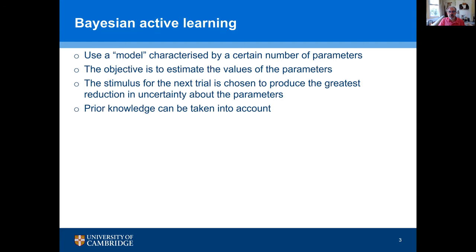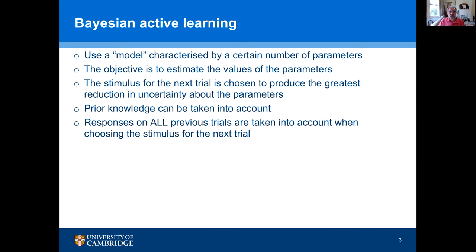Prior knowledge can be taken into account, and in particular the responses of all previous trials are taken into account when choosing the stimulus for the next trial. These methods are highly efficient and can be quicker and more accurate than traditional methods for determining the audiogram and other tests.